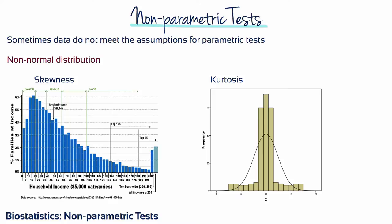A leptokurtic distribution has heavy tails, and so the probability of observing a value more than two standard deviations away from the mean is greater than 0.05. Applying a parametric test to leptokurtic data can result in an inflated type 1 error rate. Conversely, a platykurtic distribution can result in a conservative test.